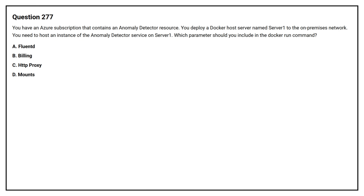Question number 277. You have an Azure subscription that contains an Anomaly Detector resource. You deploy a Docker host server named Server 1 to the on-premises network. You need to host an instance of the Anomaly Detector service on Server 1. Which parameter should you include in the Docker run command? Option A: Fluentd. Option B: Billing. Option C: HTTP proxy. Option D: Mounts. The correct answer is Option B: Billing.